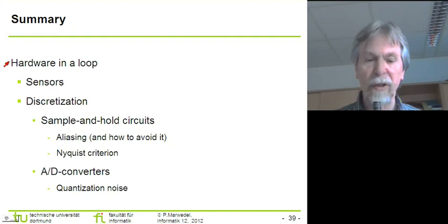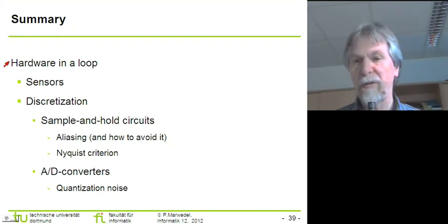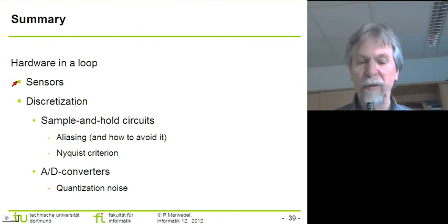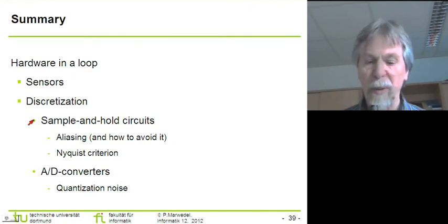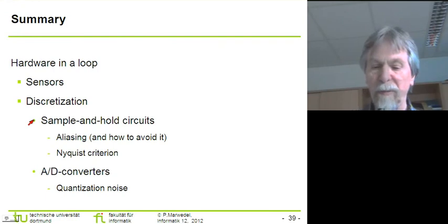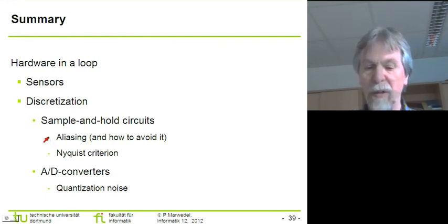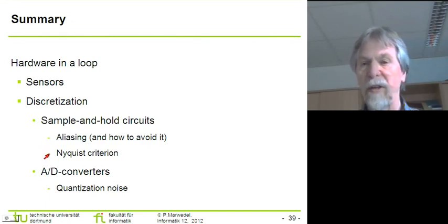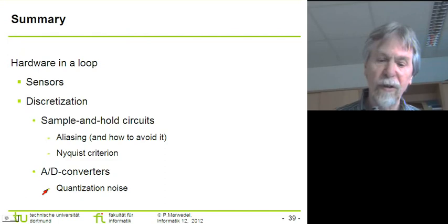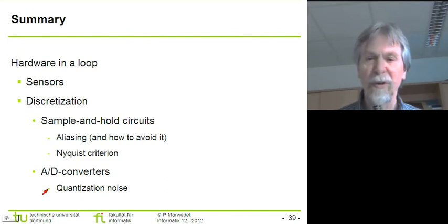So this leads to the summary of today's lecture. In today's lecture I have started to discuss the components in the hardware in the loop. I have started with a discussion of the sensors and then I moved towards a discussion of discretization. We discussed discretization of time and of values, and with respect to discretization of time I introduced sample and hold circuits, and also introduced aliasing and how we can avoid aliasing, and I discussed the Nyquist criterion that we have to meet there in order to avoid this aliasing. And then also I presented two different types of converters that you could use to convert from analog to digital values, and in this context I also introduced the notion of quantization noise. So this concludes today's lecture. Thank you very much for staying until the very end.